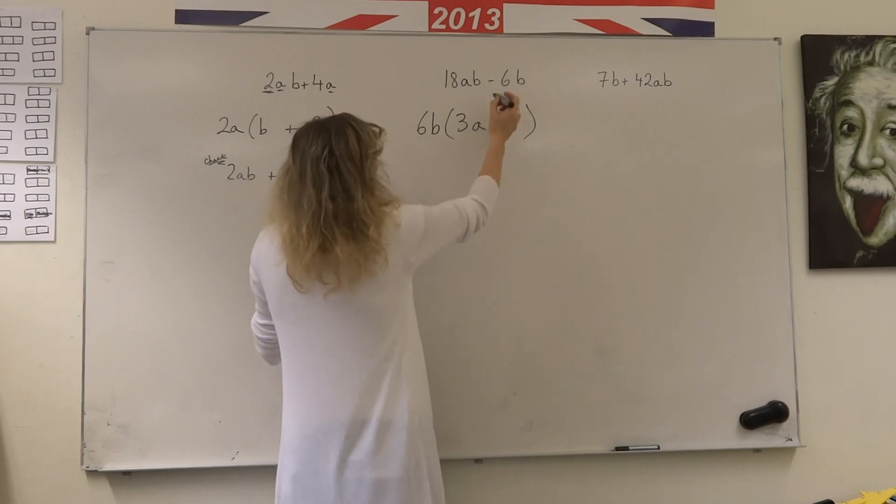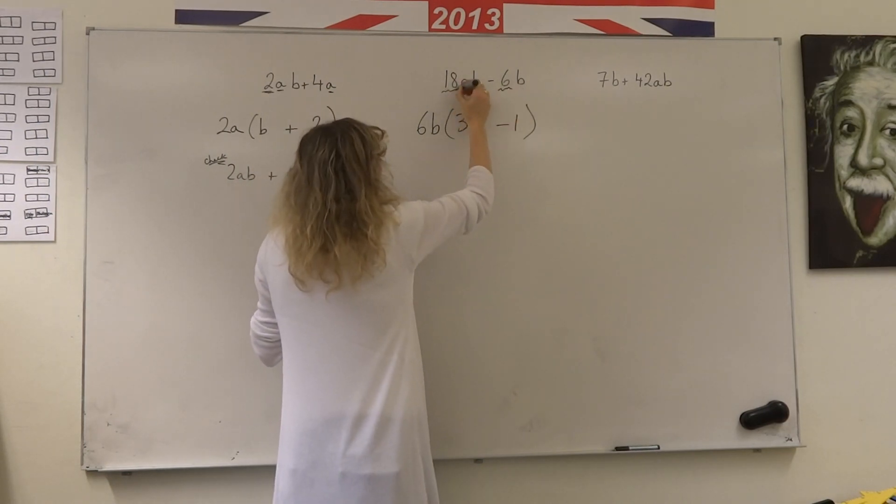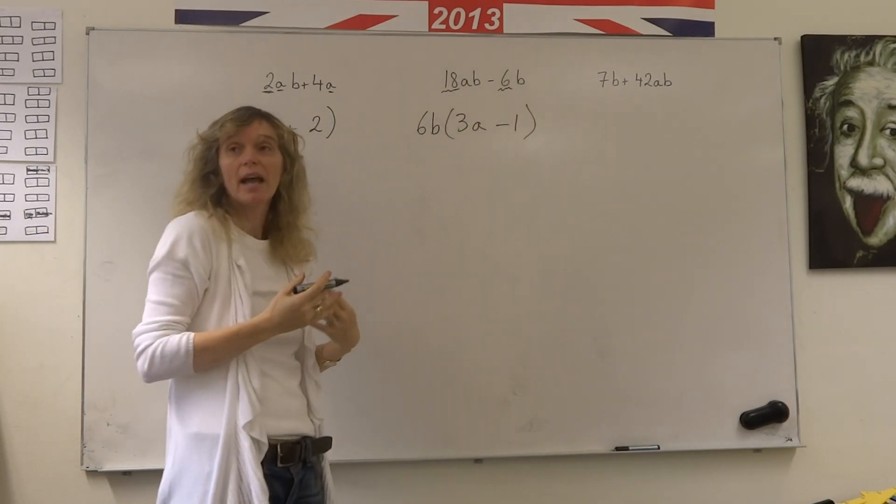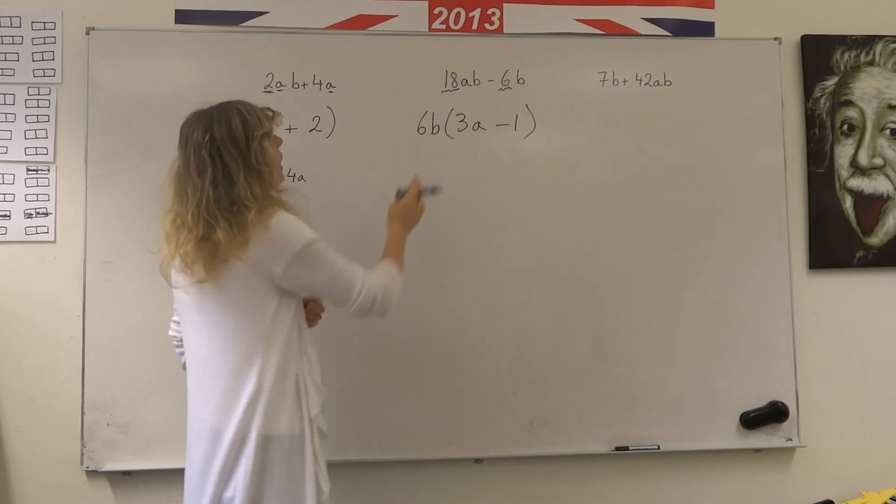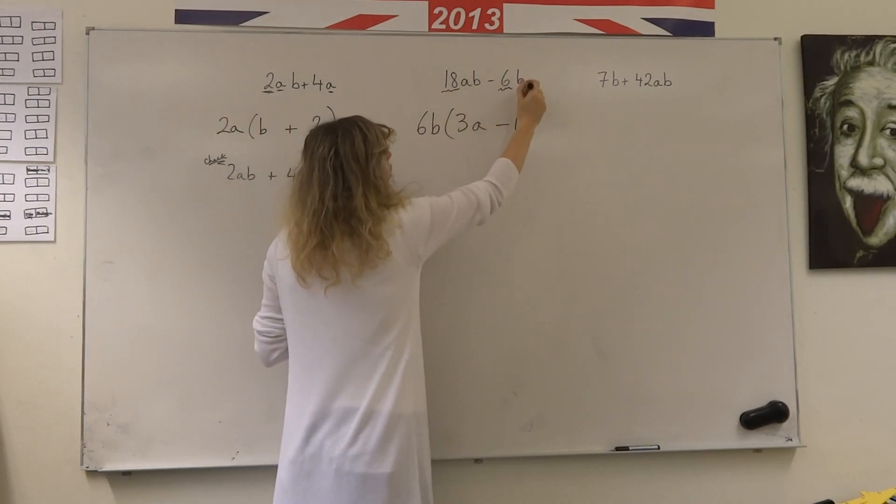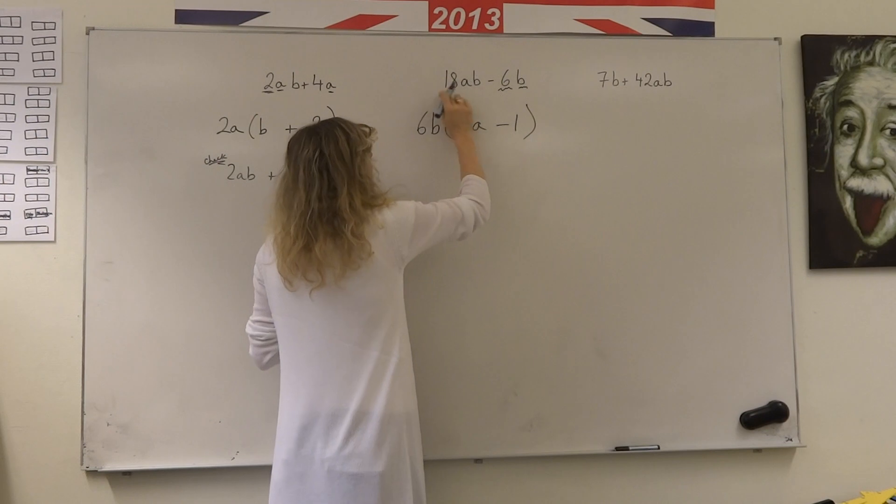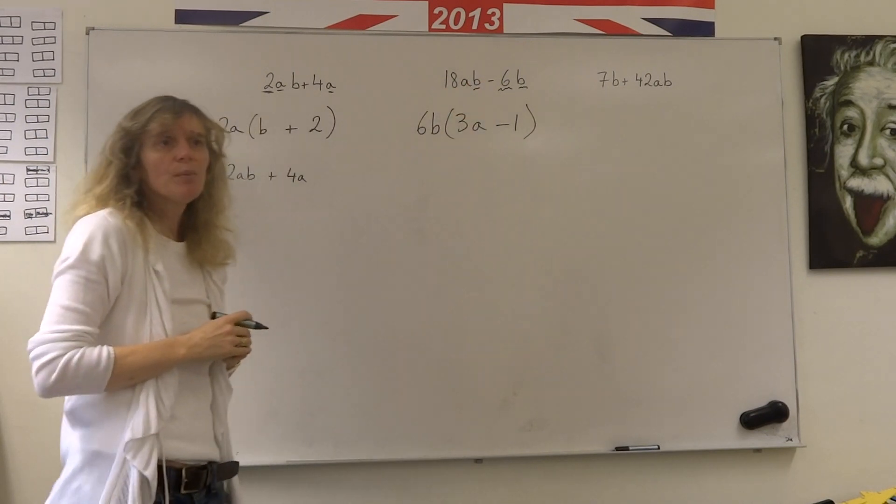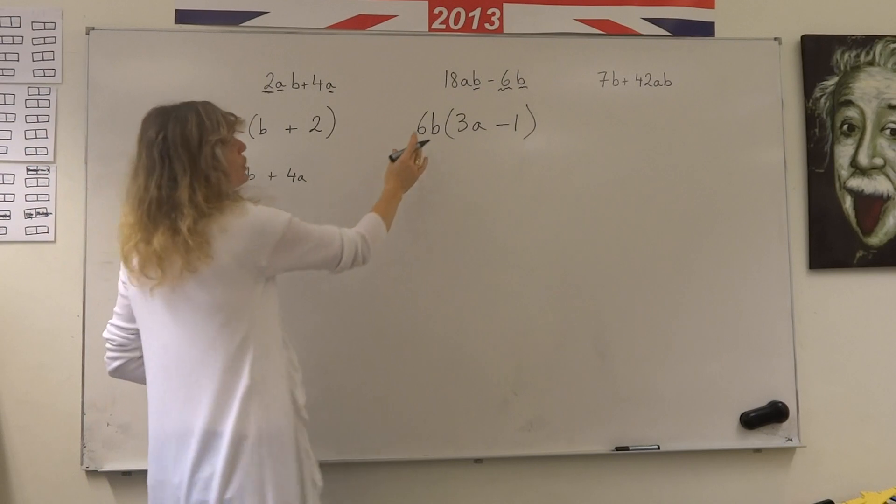You're looking for the biggest numbers here. 6 and 18, they both have a common factor. The factor is 6. AB and B, they both have a common factor. The factor is B. Then we just multiply it through and do a quick check.